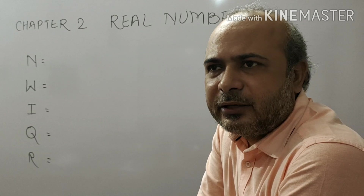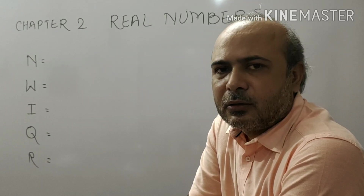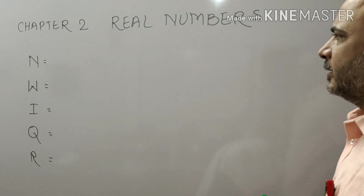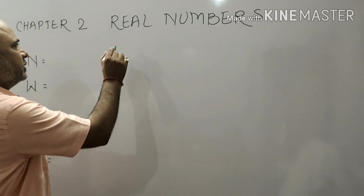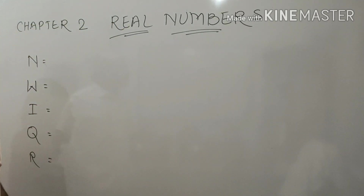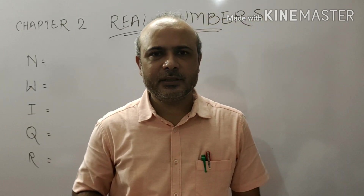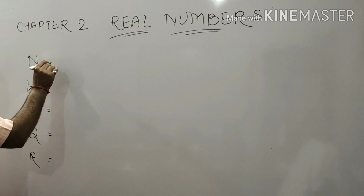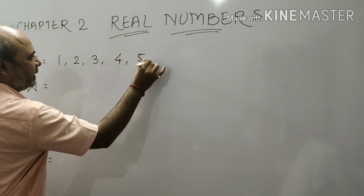In previous classes, you have already studied what is natural number, what is whole number, what is integers, and what is rational number. Now we will also see what are real numbers. Natural numbers are also called counting numbers, and counting numbers start from 1, 2, 3, 4, 5 and so on.